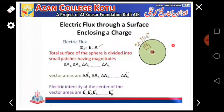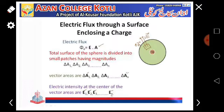Because we are looking at how much electric field there is — we are viewing it from outside. Vector areas are del A1, del A2, del A3 up to del An. The electric intensity at the center of the vector areas are E1, E2, E3 up to En. If the area goes up to del An, then the electric field will also go up to En.